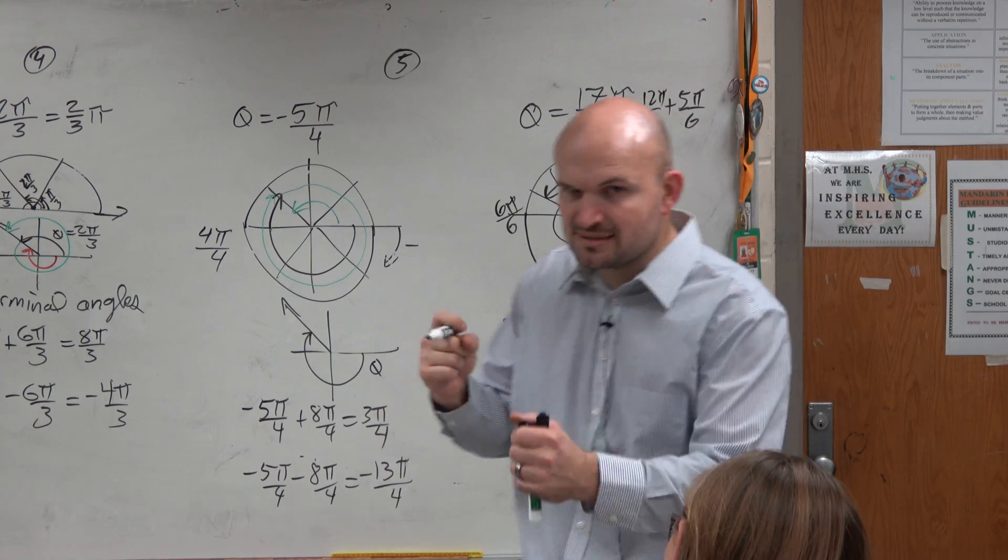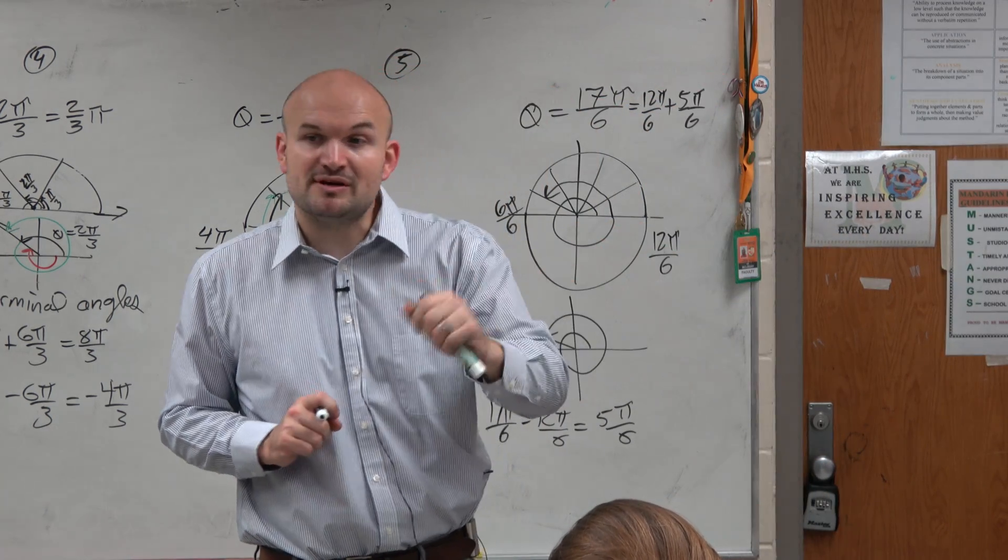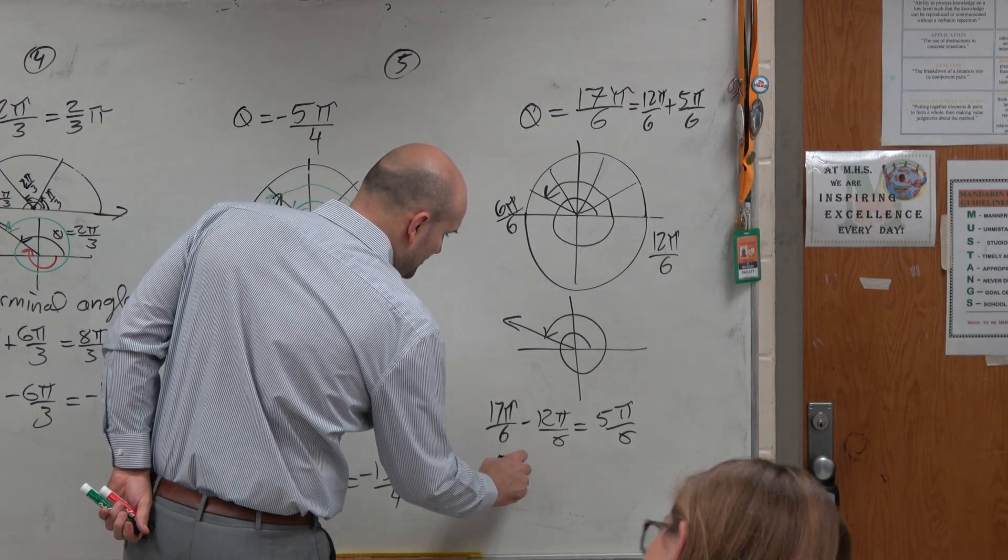So it's not always just add and subtract 2π. Sometimes you have to add 2π twice. Sometimes you have to subtract 2π twice to get to a positive and a negative. So that's exactly what I would do.